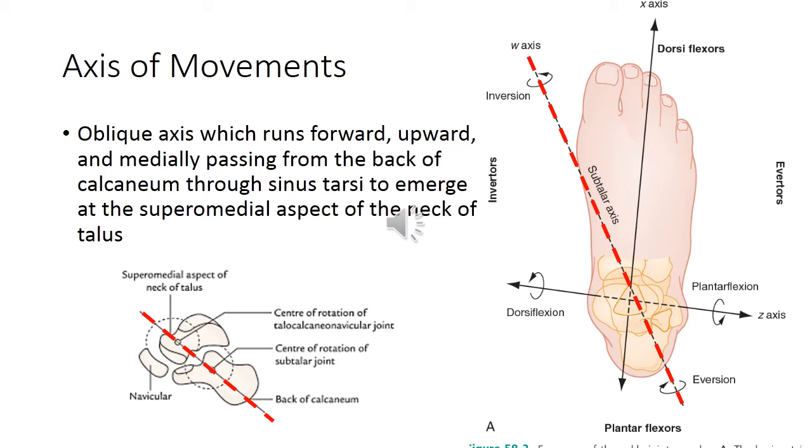Now the axis of movements. Axis of movements is the axis around which this inversion and eversion takes place. This is an oblique axis which runs forwards, upwards and medially.